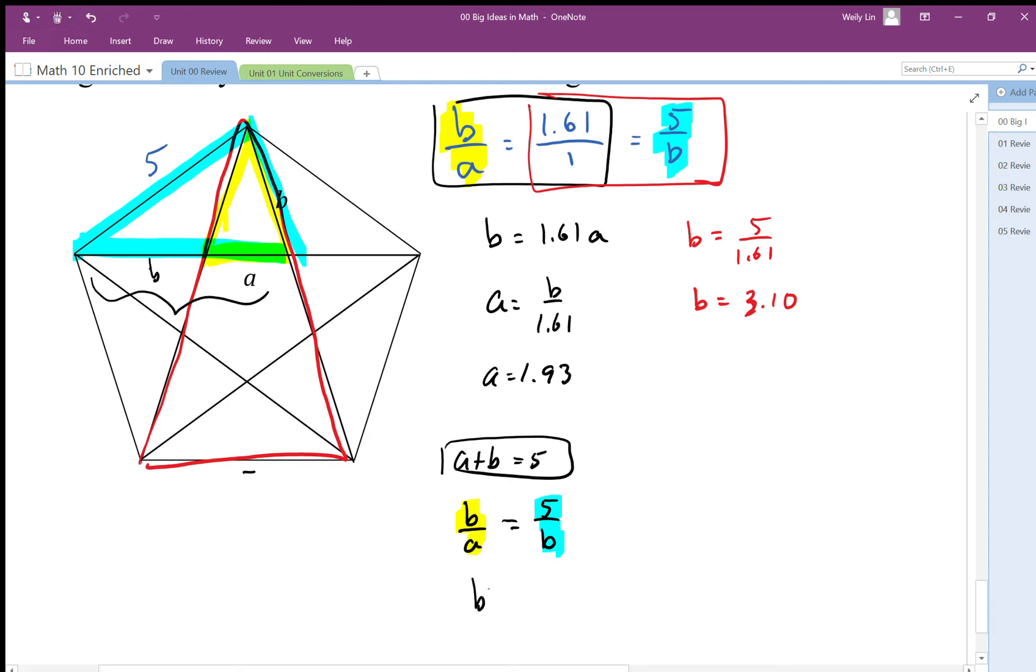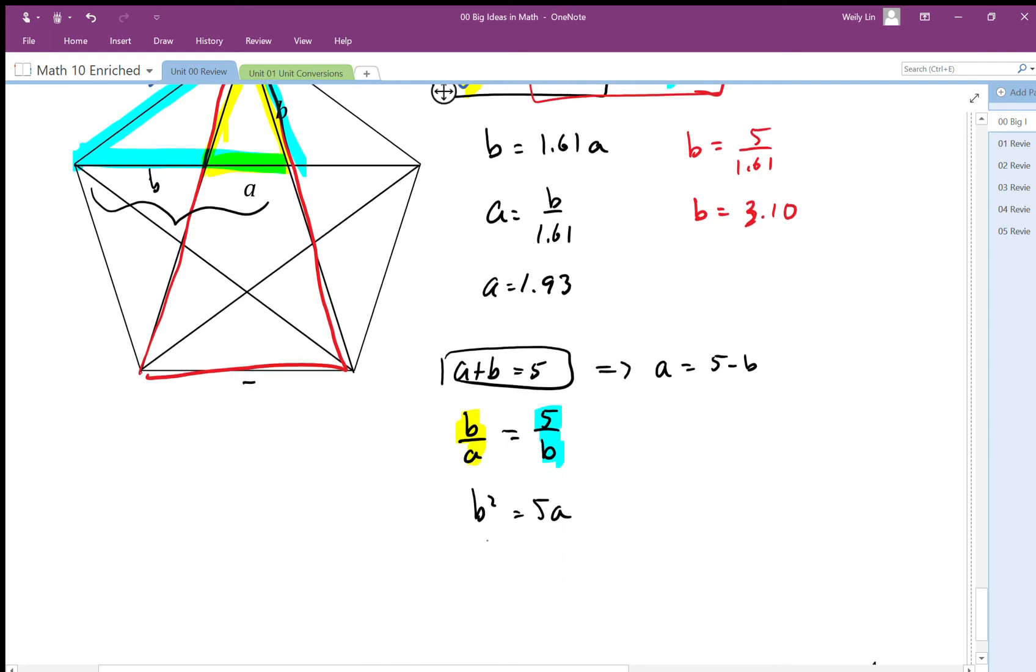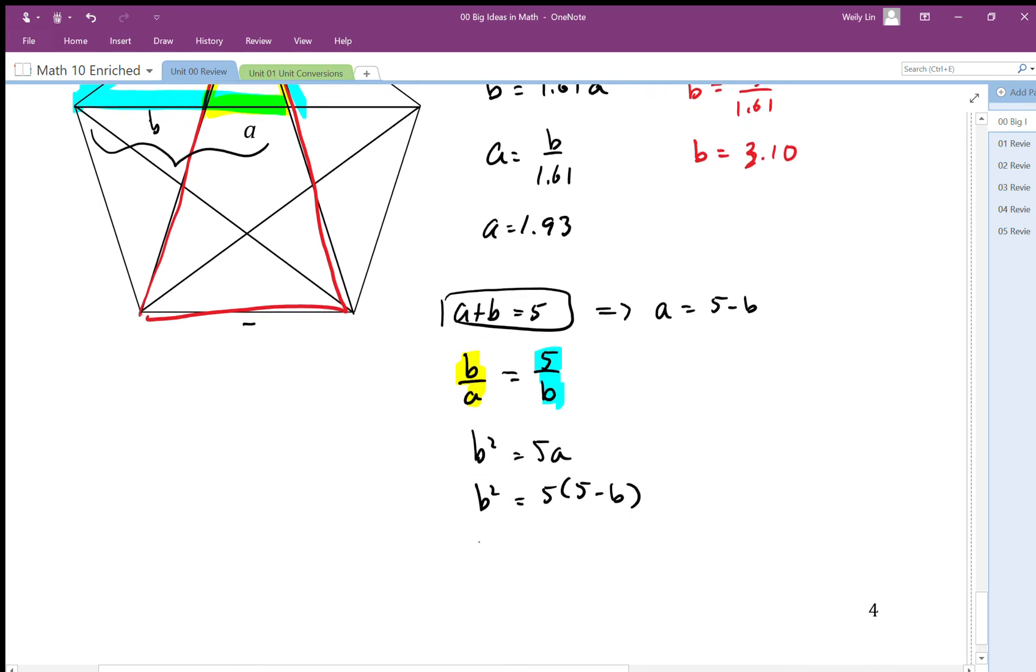I end up with b squared is equal to 5a. Then using this, I'm just going to replace the a: a is equal to 5 minus b. So I end up with b squared is equal to 5 times 5 minus b. We end up with something called the quadratic equation: b squared equals 25 minus 5b.